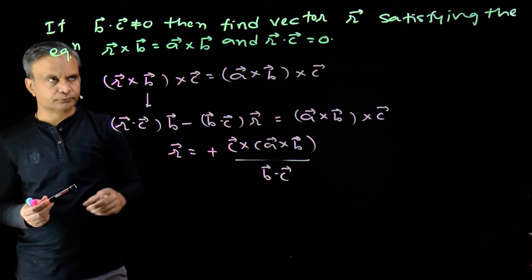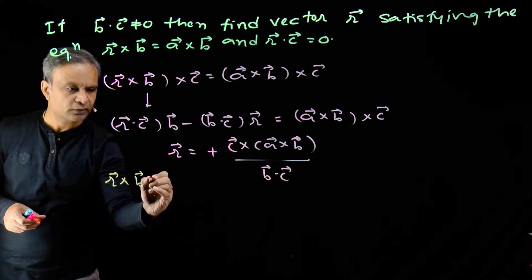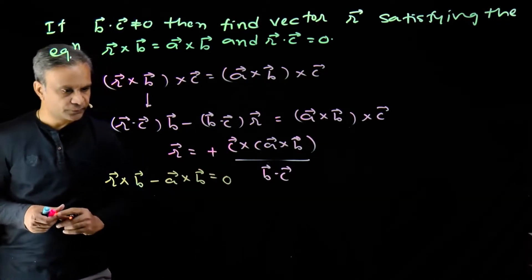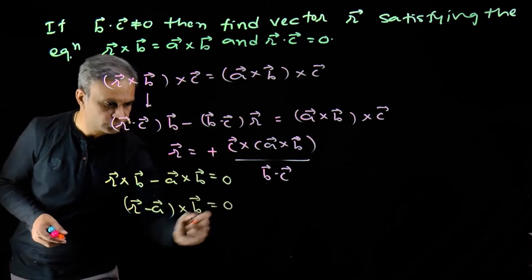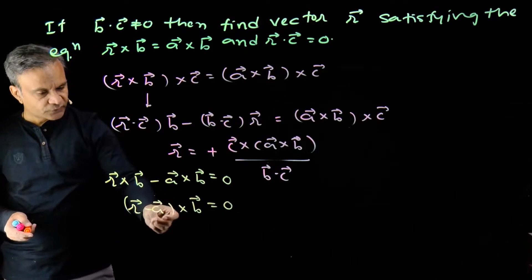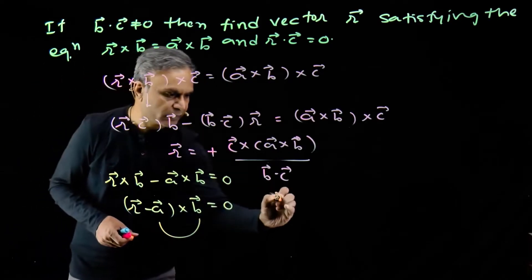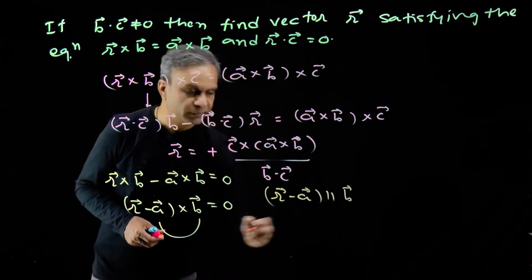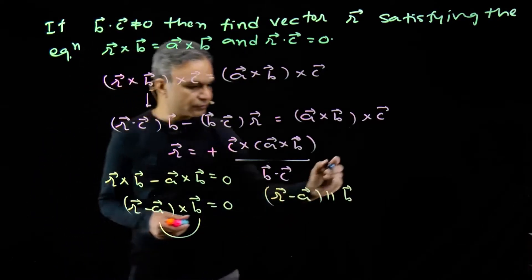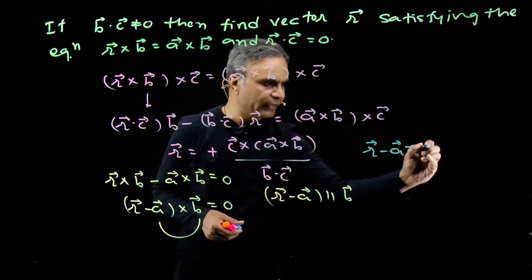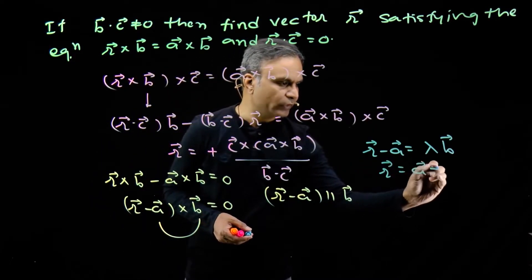We can also do this another way. We transfer the term on LHS, giving us r cross b minus a cross b is equal to 0. This becomes r minus a cross b is equal to 0. The inference is that these two vectors will be parallel — vector r minus a will be parallel to vector b. We can write this as r minus a is equal to lambda b, so vector r is equal to a plus lambda b. But we need to find the value of lambda.